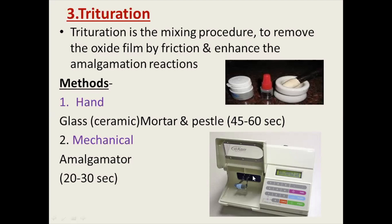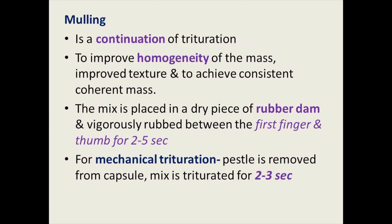After trituration, you will have to do mulling. Mulling is a continuation of trituration — it improves the homogeneity of the mass, improves the texture of the mixed material, and achieves a consistent coherent mass. It is done by placing the mixed material in a dry piece of rubber dam and vigorously rubbing between the first finger and thumb for 2 to 5 seconds. Never touch the mixed material with bare hands as moisture from fingers can contaminate the material. For mechanical trituration, mulling is done by removing the pestle and triturating for 2 to 3 seconds.